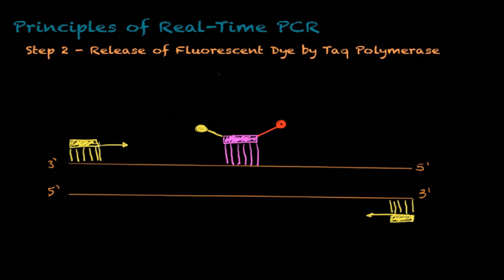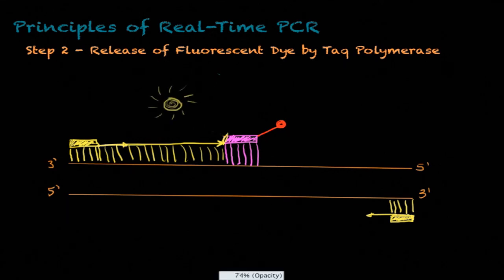It's time to talk about step number two of real-time PCR. This is the release of fluorescence dye by TAC polymerase. What is happening now is polymerization of a new DNA strand is initiated from the primers, as you can see. Once the polymerase reaches the probe, it will degrade that probe and physically separate the fluorescent reporter or the fluorescent dye from the quencher, resulting in increased fluorescence.